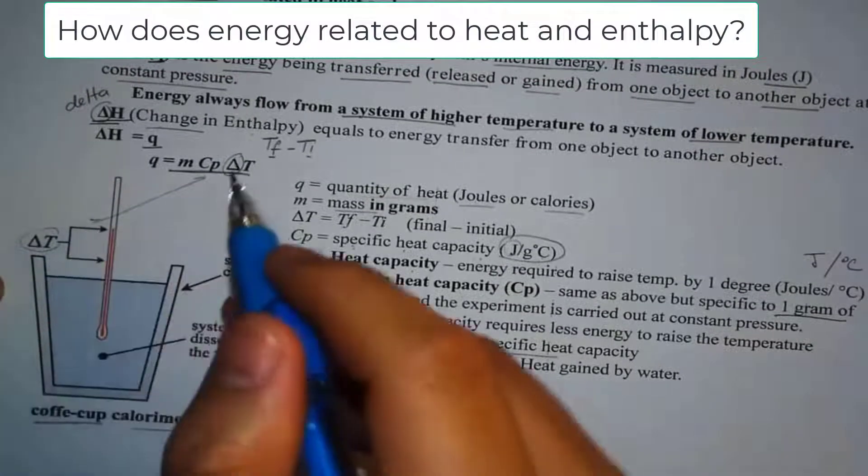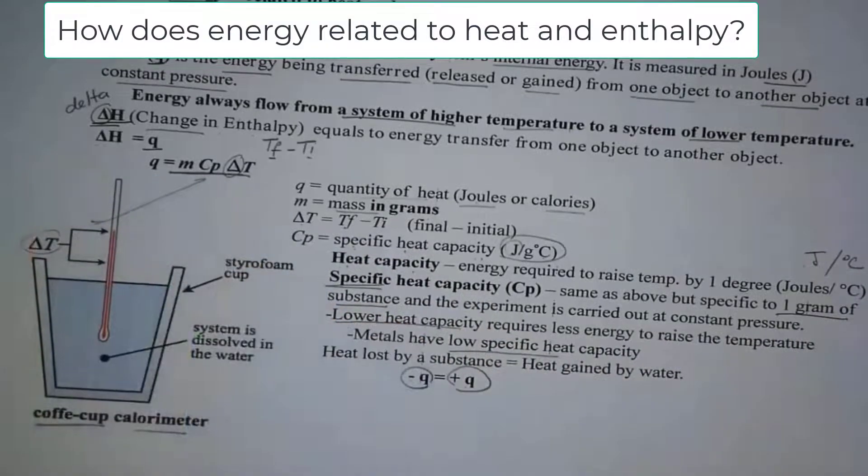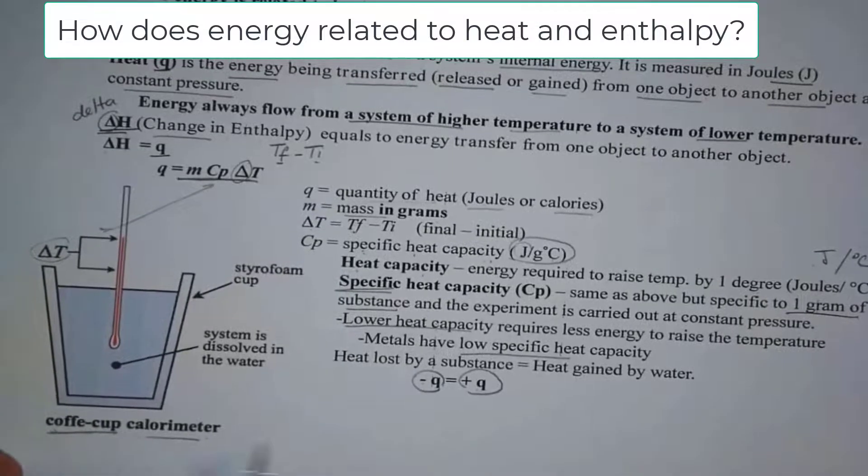And once we get the change in T, we can actually solve for specific variables in the equation. So we're going to look at those more specifically. So again, know that we are using a coffee cup calorimeter. Calorimeter. Say that again. Calorimeter.